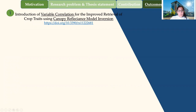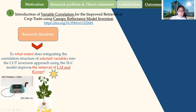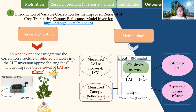The first paper title is: introduction of the variable correlation for improved retrieval of crop traits using the canopy reflectance model. The research question is: to what extent does integrating the correlation structure of collected variables into the lookup table using the SLC model improve the retrieval of LAI and fraction vegetation cover? The analysis of this paper was done for one season under perfect weather conditions using the ASD hyperspectral data. We measured three variables in the field and found that two variables, LAI and fraction vegetation cover, have strong correlations in the study area, and we wanted to reflect this information into the model.